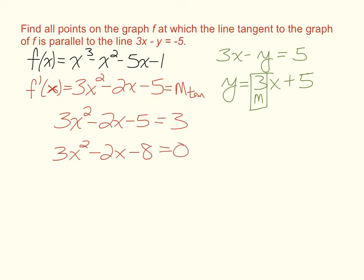This quadratic expression then factors into the quantities 3x plus 4 and x minus 2, and this is still equal to 0. When you set each of these factors equal to 0 and solve for x, you'll get two values for x: x equals negative 4 thirds and x equals 2.